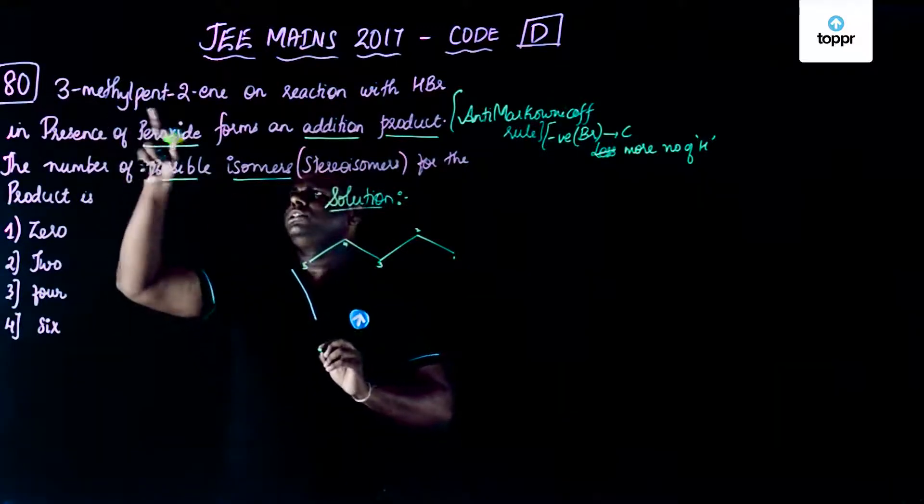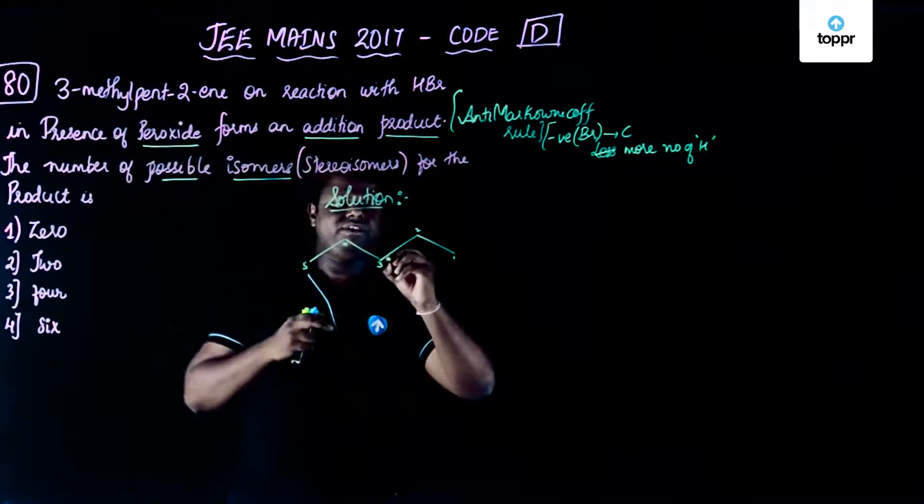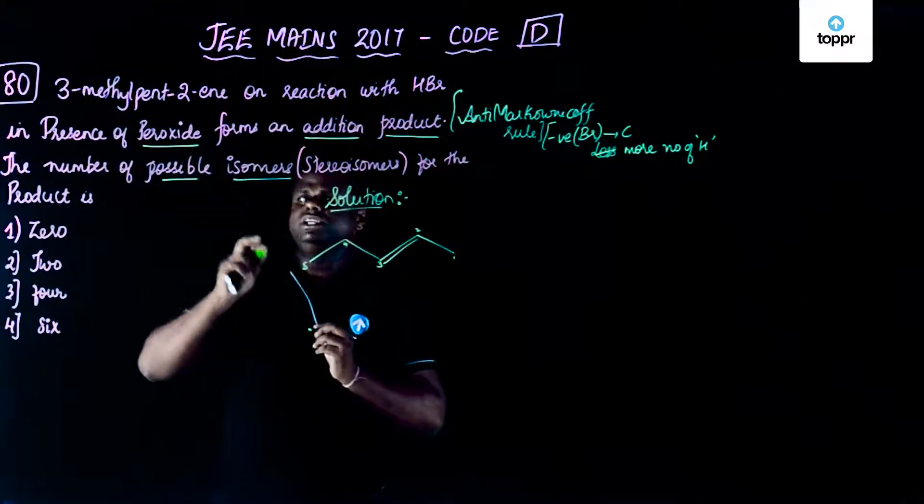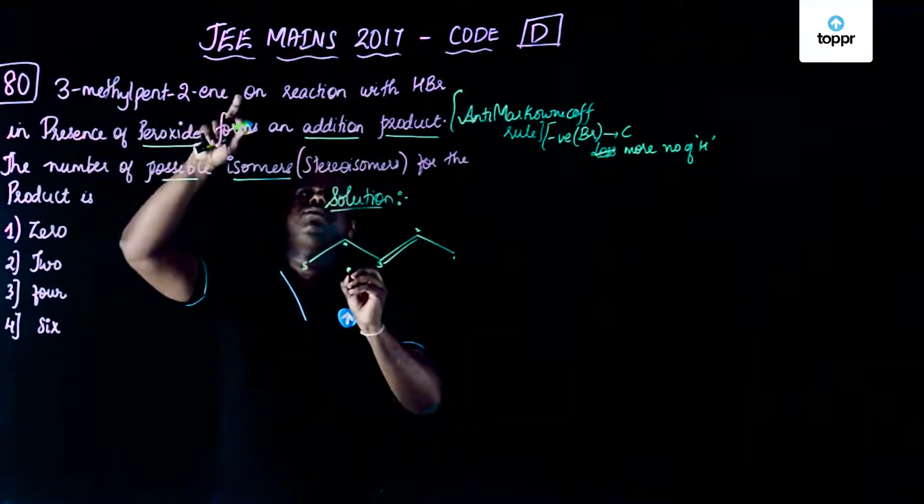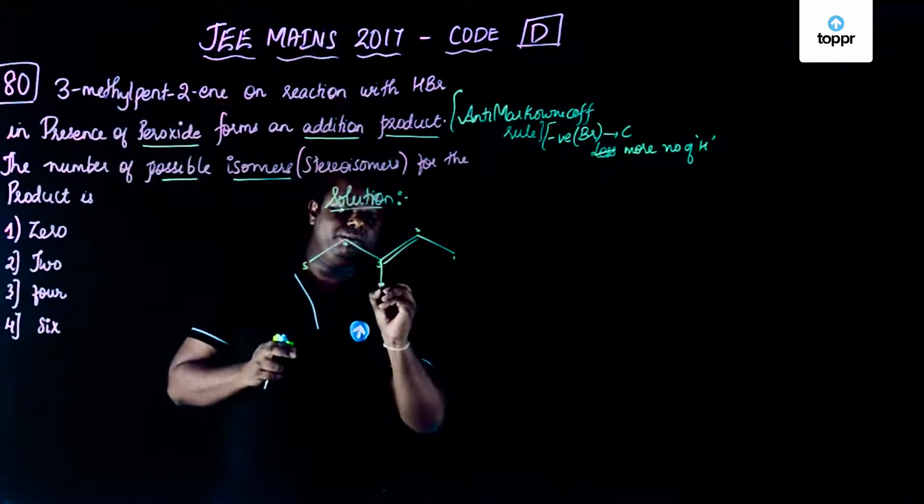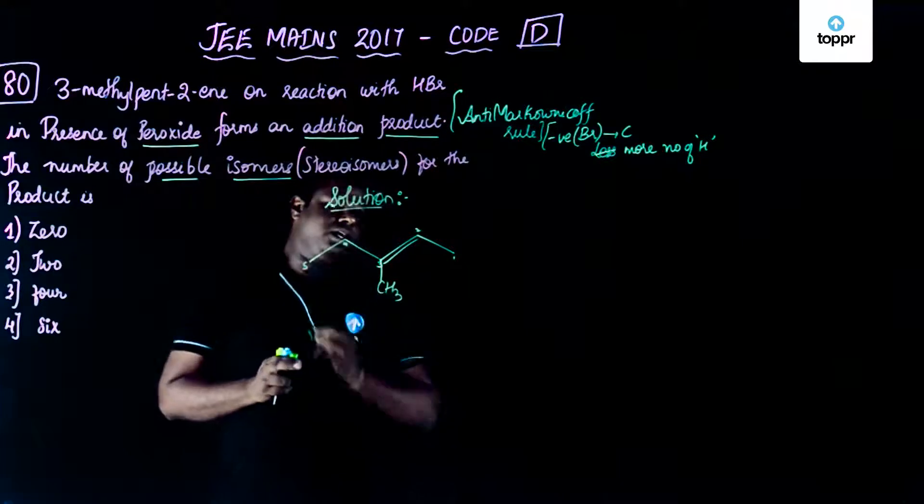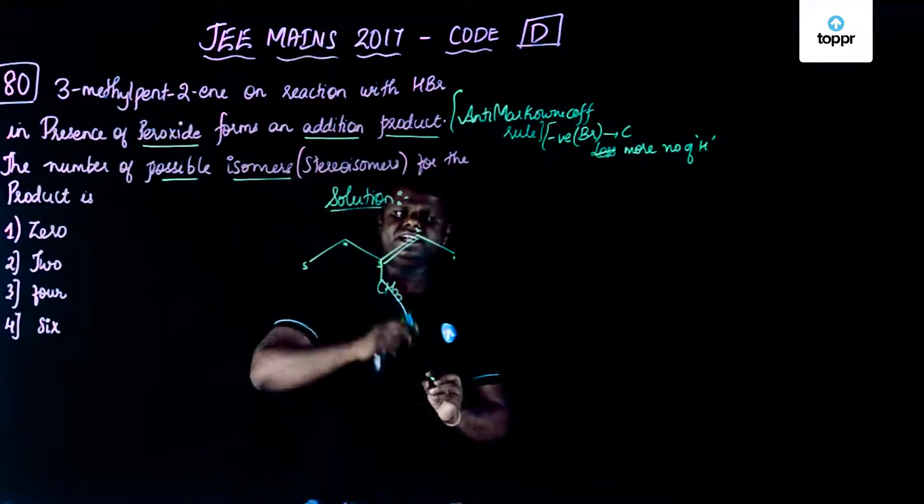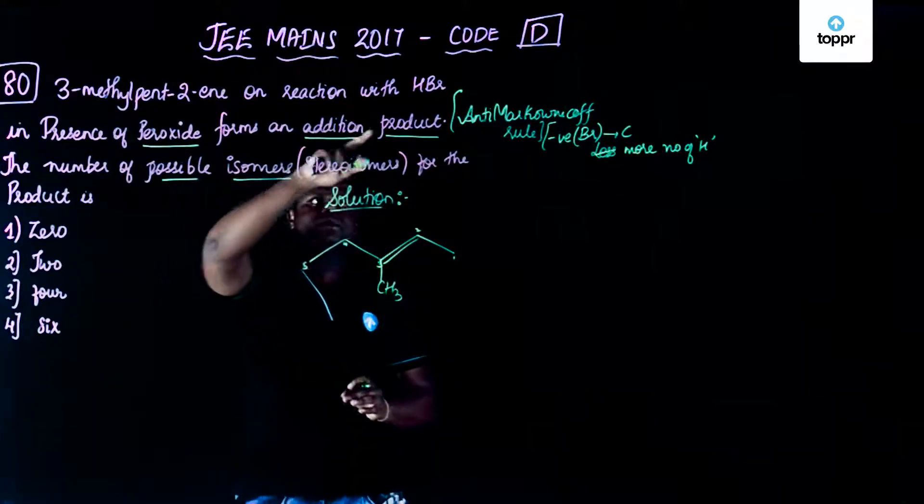So the double bond is between 2 and 3, that's why it is given pent-2-ene. So it is right this way. Now at position 3 you have a methyl group. So let's put the methyl group over here. So this is basically the reactant which are expected to react with HBr.